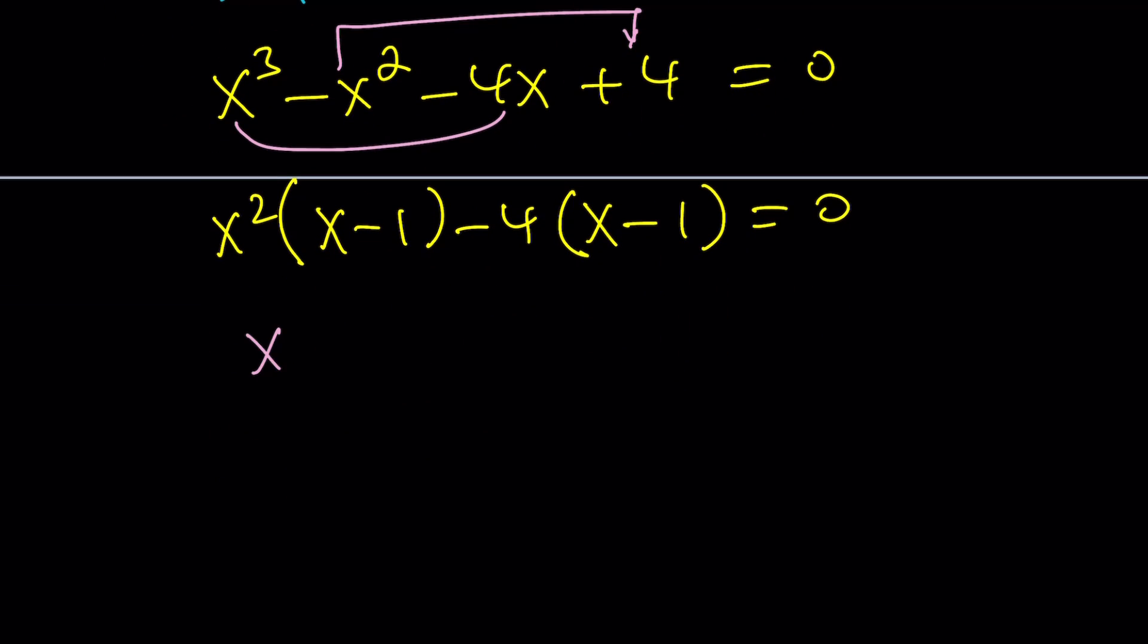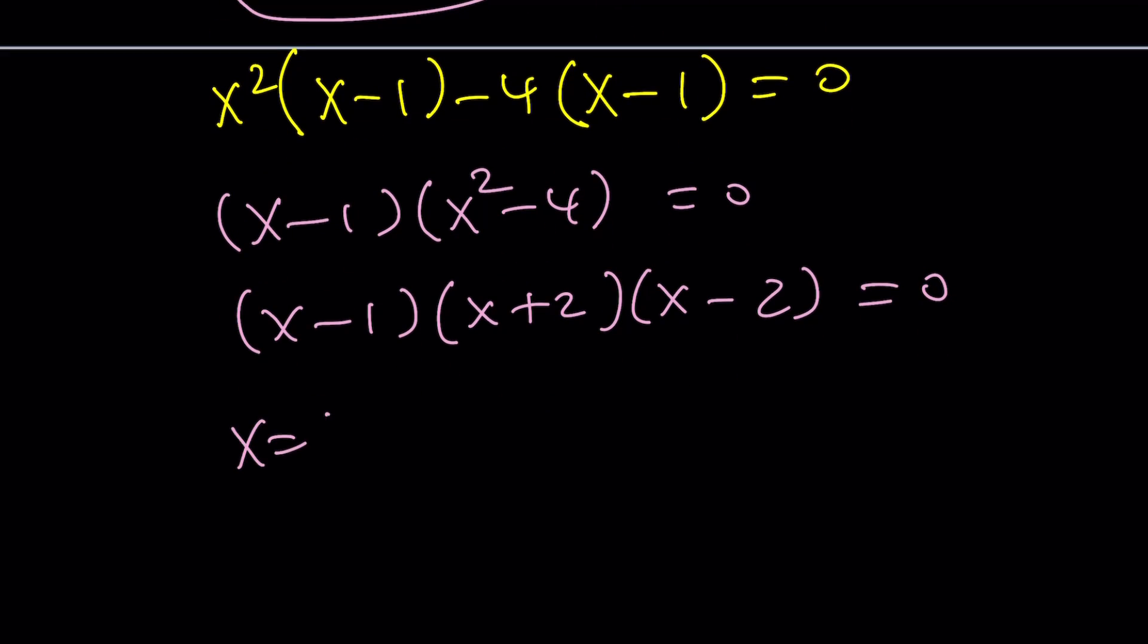So, take out (x-1) from here and x² - 4 of course is the difference of two squares. Again, it's always the same thing. (x+2), (x-2) and we get the exact same solutions: x equals 1, x equals negative 2, and x equals 2. And, you know that they already checked. Right?